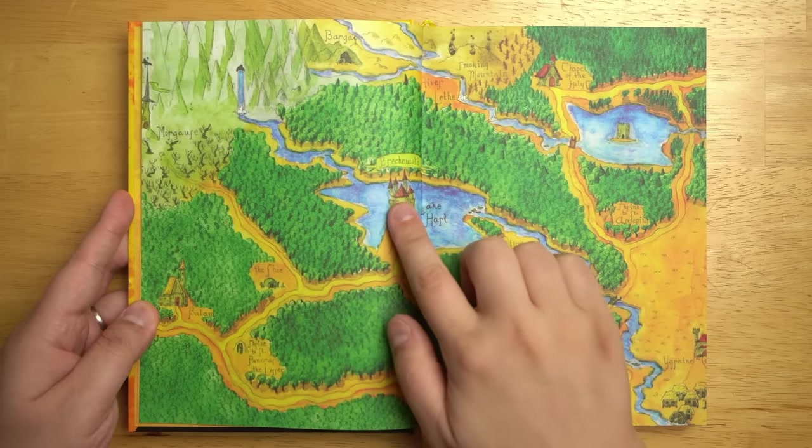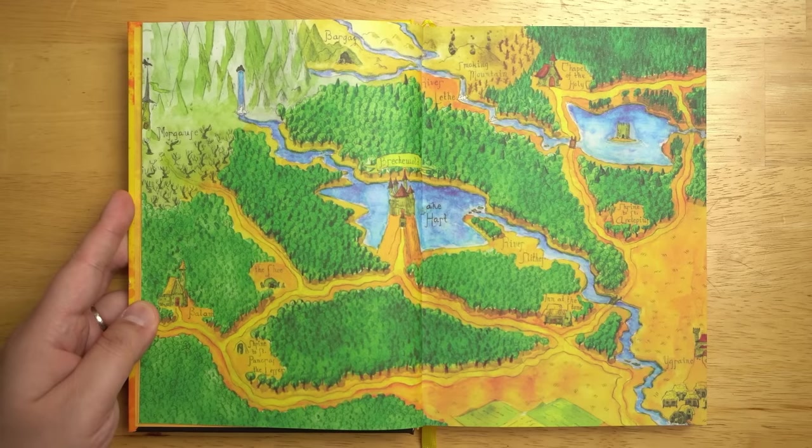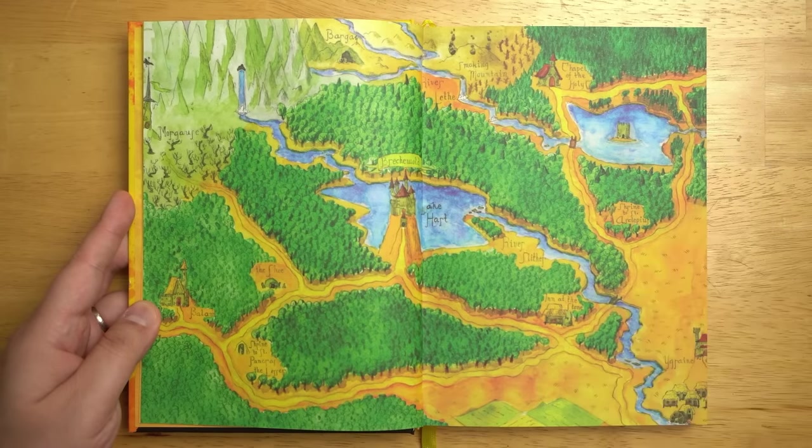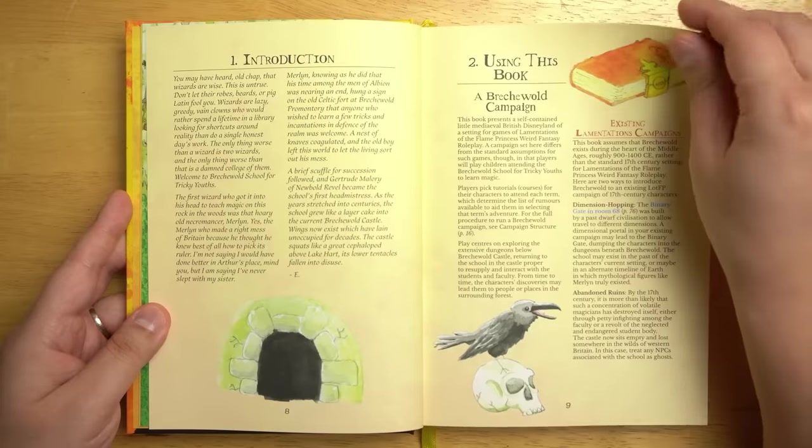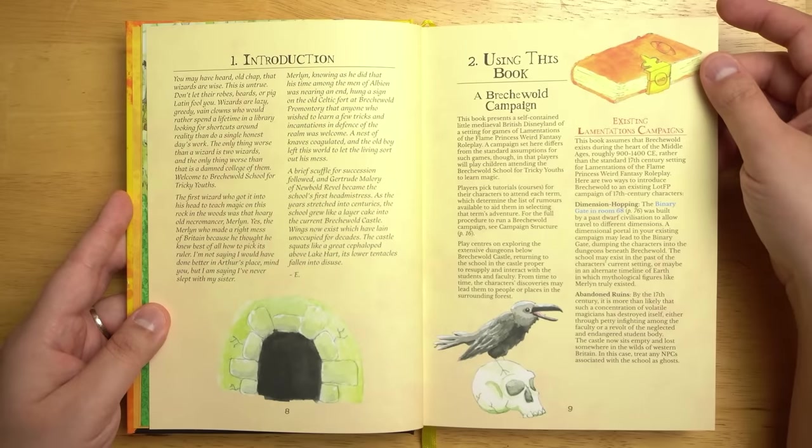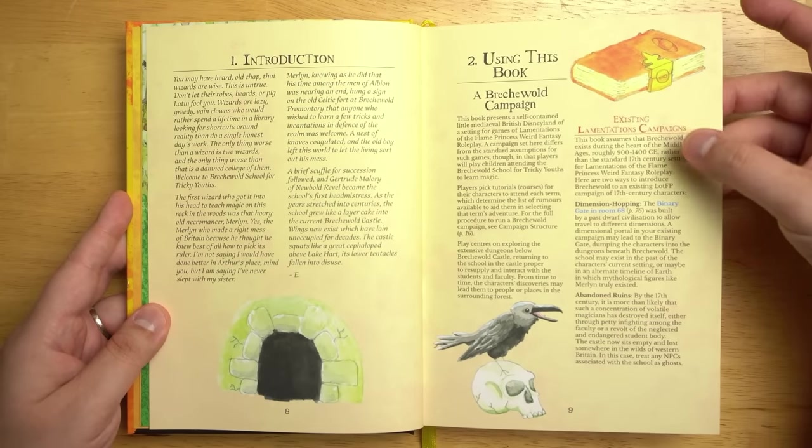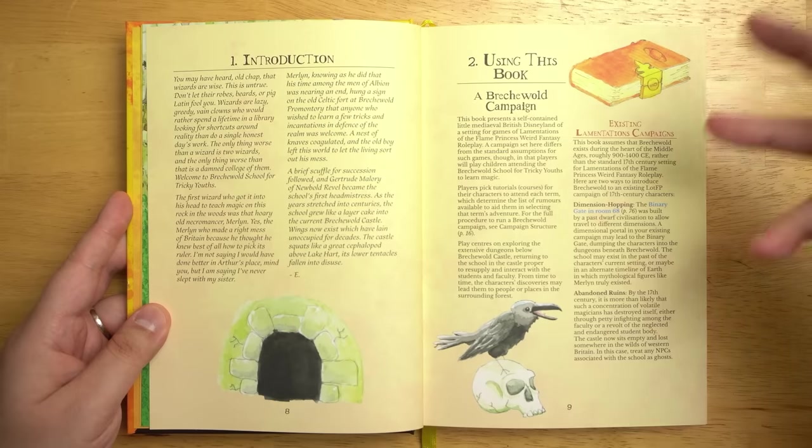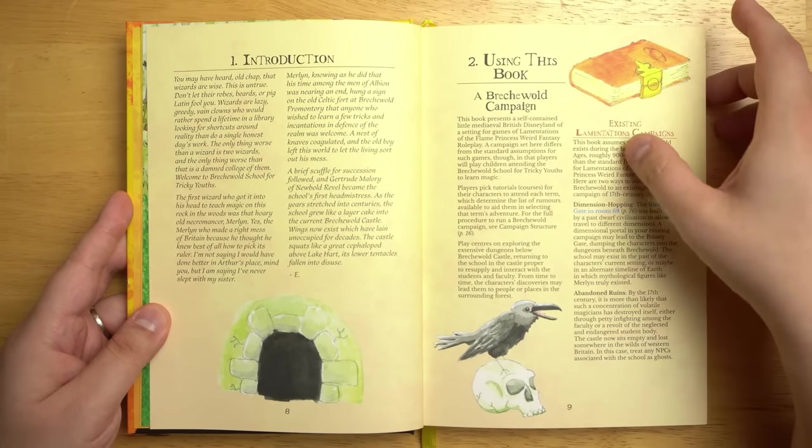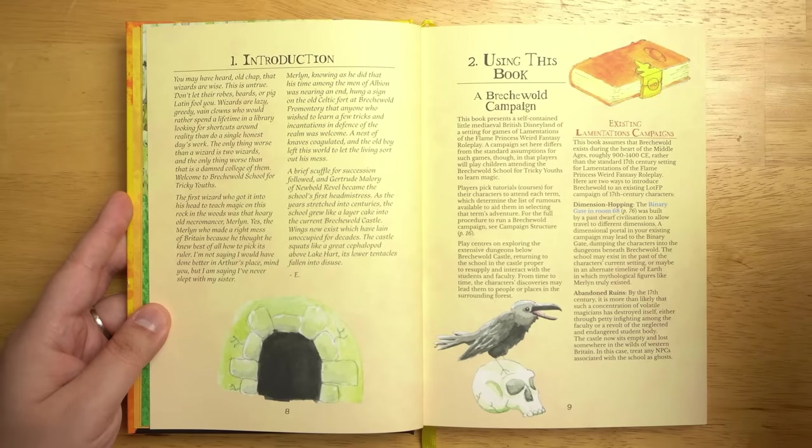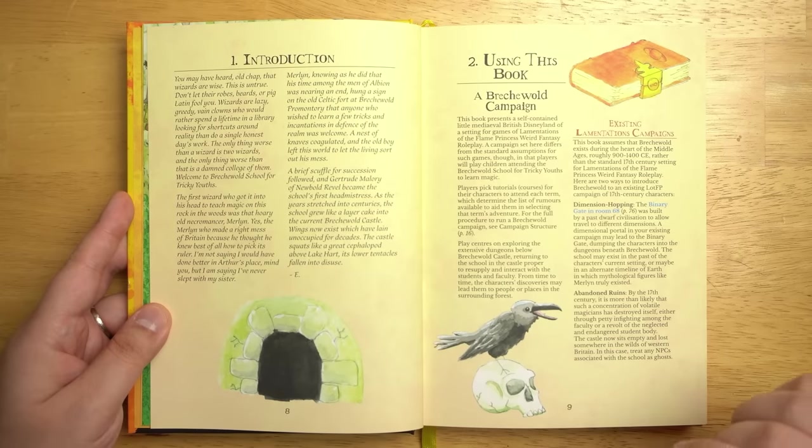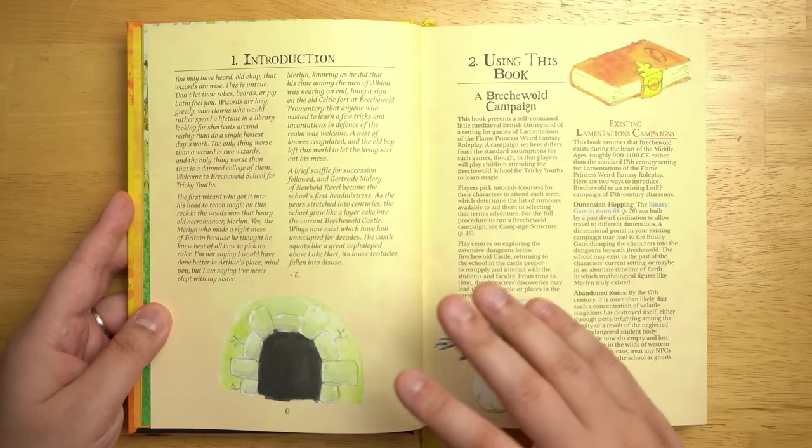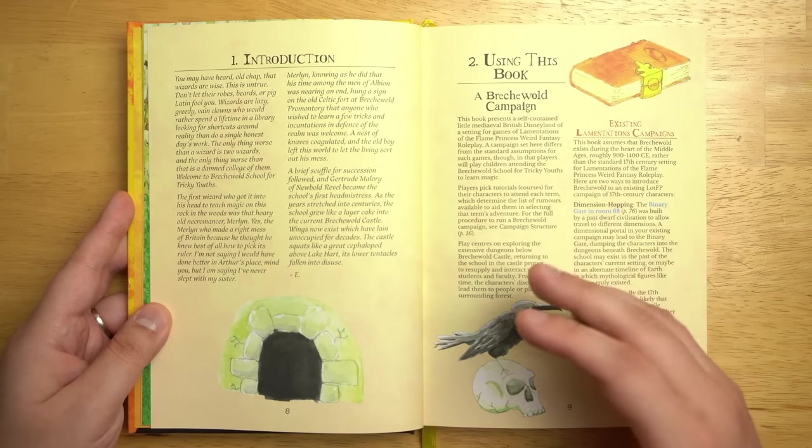Here's an initial map early on where you have Breckowold Castle right there in the middle along with a number of locations. We'll see the hex map as we go a bit further into the book, but there's quite a few places to explore. We have a general overview on how to use this campaign and how to fit it into other Lamentations campaigns. It does not take place in the late modern or the early modern period. As I mentioned, it's more in the 900 to 1400 period. So if you wanted to set this in a traditional Lamentations campaign, you can either do time travel or perhaps where they travel to the past, or you could invest in the castle as is, but simply have all of the NPCs in the castle be ghosts.